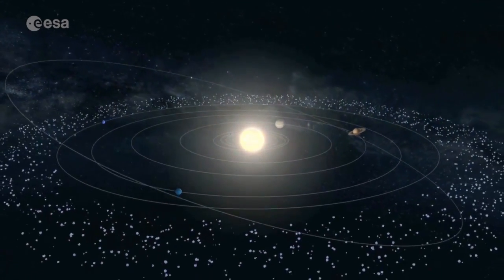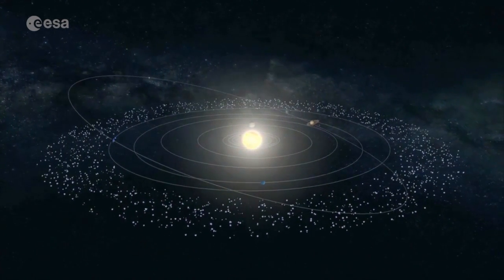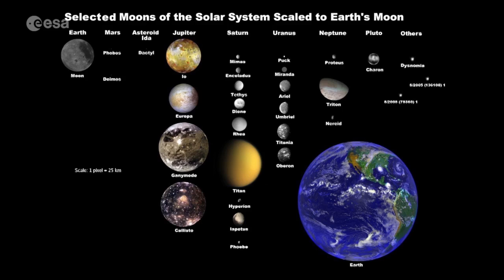Among the terrestrial planets, we have one planet with a large moon — that's the Earth. So the question is, why did only the Earth have a large moon? We can imagine four possible theories which explain the origin and the evolution of the Earth-moon system.